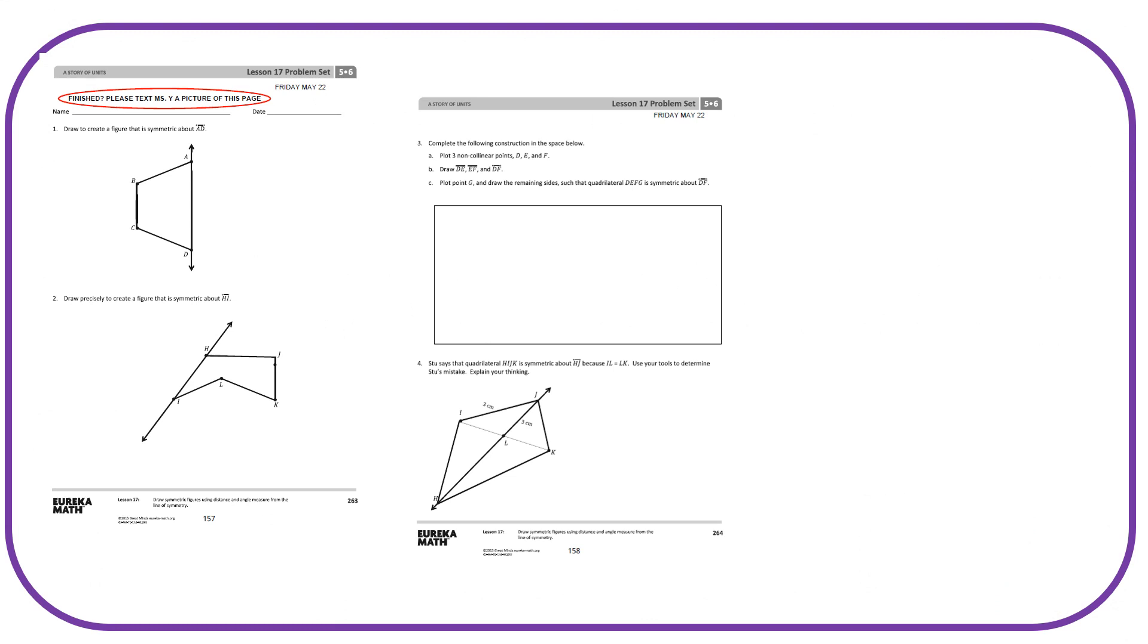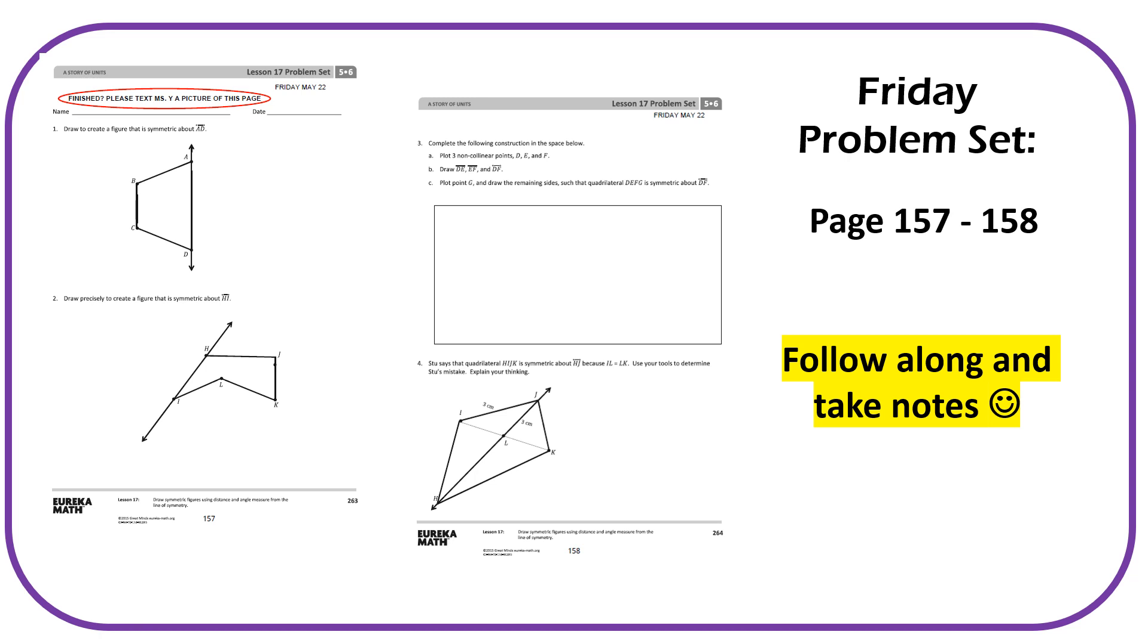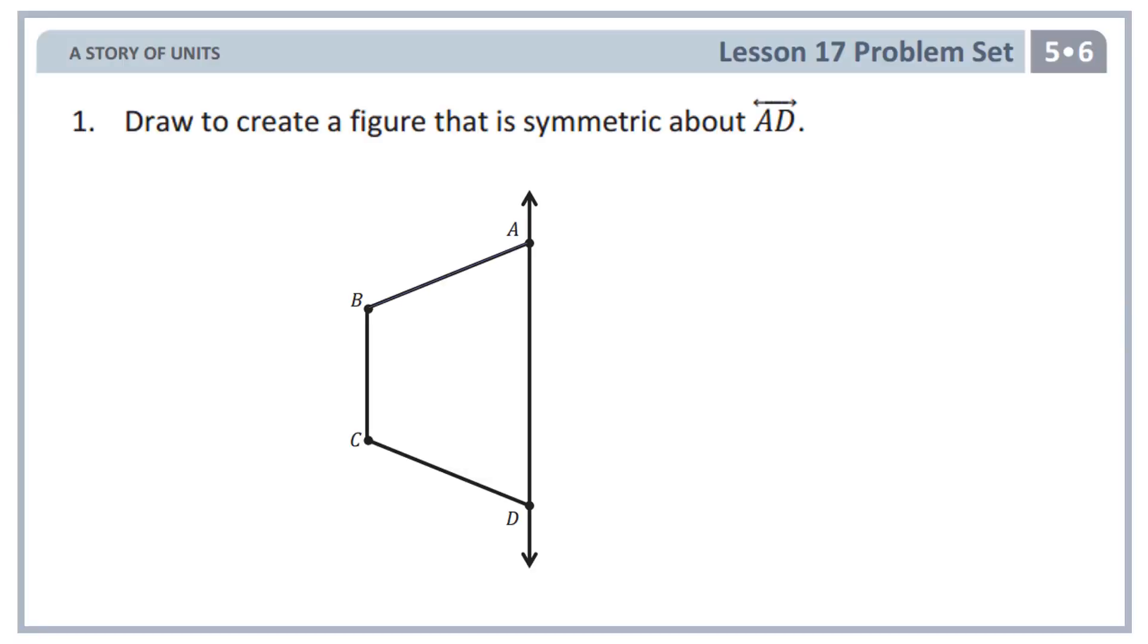In today's lesson, our pages are going to be page 157 to 158. That's your problem set pages. We're going to go over all the questions, so I'd like you to follow along and take notes on those two pages. Like we always do, those two pages are going to help you with your independent practice pages on 159 and 160. Let's begin with problem one. Problem one says, draw to create a figure that is symmetric about AD.